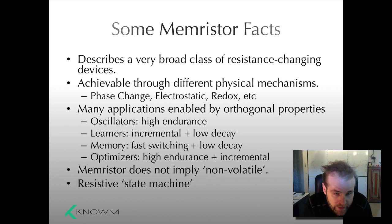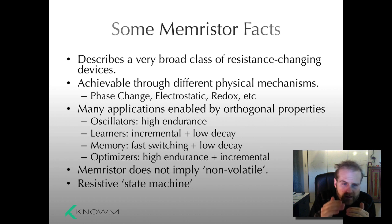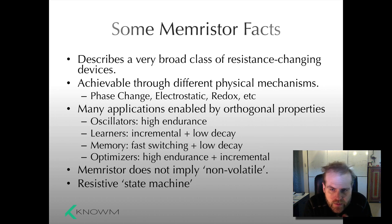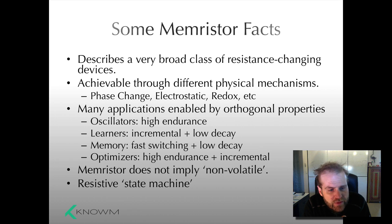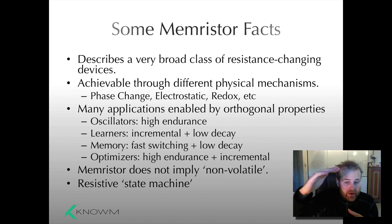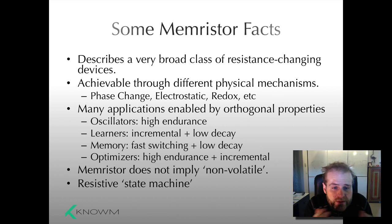For oscillators, you want very high endurance and you might not want the non-volatile property — low decay is probably the more accurate way to say that. Learners — this is what GNOME Inc. is really interested in: the ability to make learning circuits. For this, we want incremental behavior. We want to be able to step the conductance up or down by applying pulses to mimic learning. We want that incremental property, and in most cases we want very low decay — we want to hold those memories for a long time. For digital memory applications, we want really fast switching. This is at odds with slower incremental learning properties. You also want low decay to retain the memory for a long period of time, but to get that low decay you need big potential energy barriers between states, which requires more voltage and causes more energy dissipation, leading to fewer cycles.